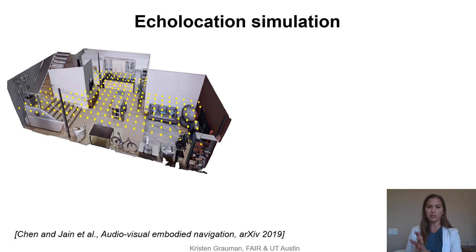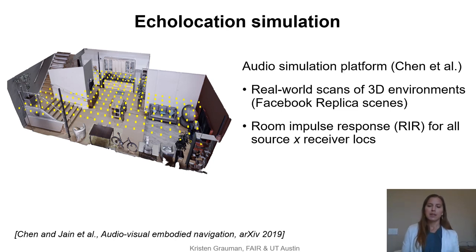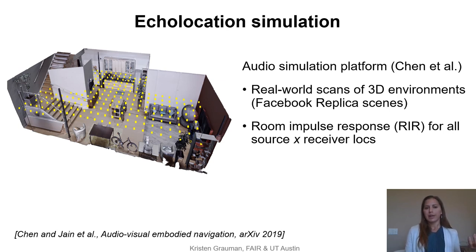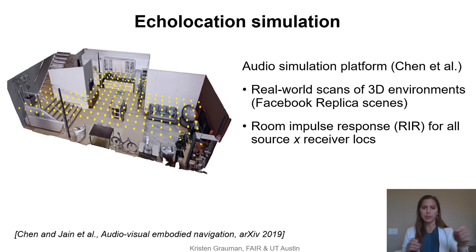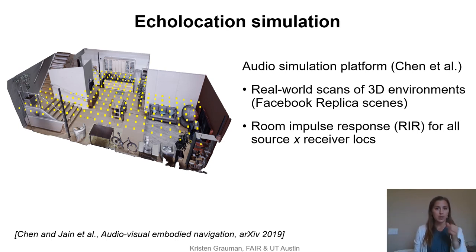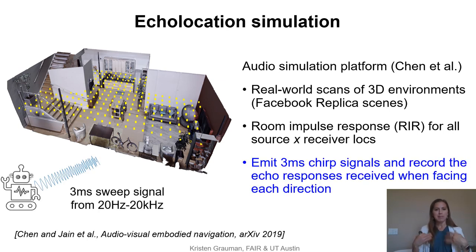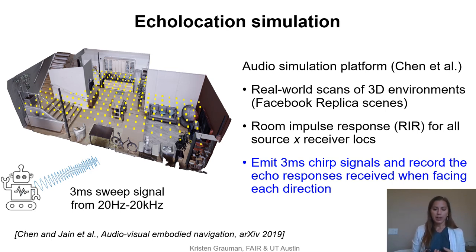To get the data to create these echoes, we developed a simulation platform for 3D environments, starting with the Replica scenes from Facebook's public dataset — real-world 3D scans with state-of-the-art audio simulation. We pre-computed the room impulse response at all locations shown in yellow, so you can render the sound of interest for any new waveform by convolving it with the room impulse response at the appropriate position. For echolocation this means placing the agent and the sound source at the same position: the agent emits a chirp sweep signal and receives the resulting echoes.